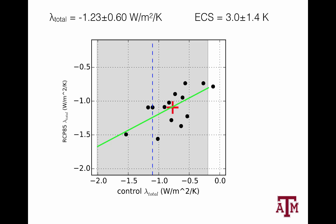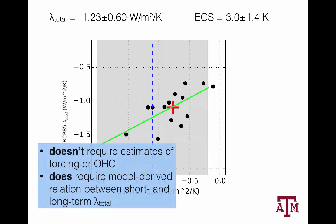So what's the advantage of this approach? The first big advantage over other 20th-century estimates is that it doesn't require you to know the forcing in great detail, because the forcing didn't change much over this period. And it doesn't require you to know the ocean heat content because you can measure the TOA flux from satellite — and those are two things we really don't know very well.